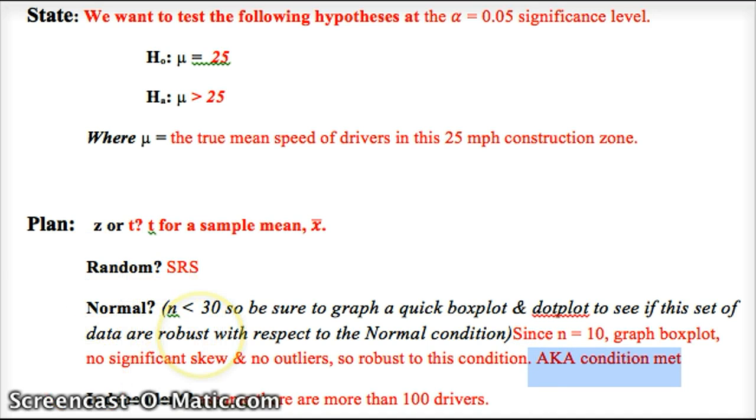That means the condition is met. Meaning even though we're not told the population is normal and n isn't 30, we can move on and assume normality still works for us as a good approximation. Independent, we can assume there's more than 100 drivers. That's a fair assumption. So we've just done state and plan.